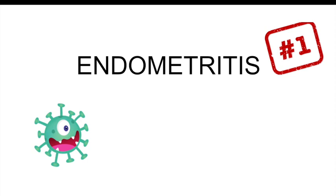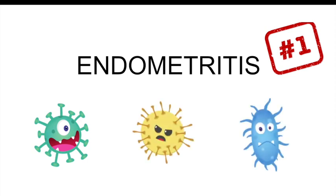Endometritis is an inflammation or irritation of the lining of the uterus called the endometrium. It is also possible for it to cause inflammation of other layers such as the myometrium or parametrium. It is the number one cause of postpartum fever, and it occurs due to a polymicrobial infection with around two to three ascending organisms such as Group B Strep, Ureaplasma, or Gardnerella.